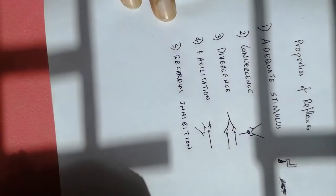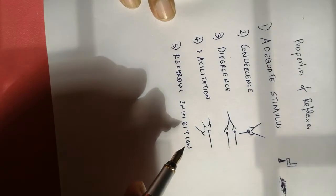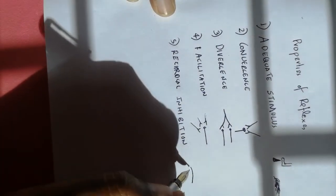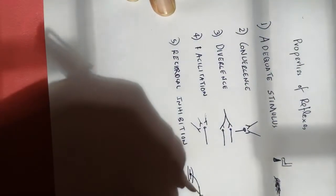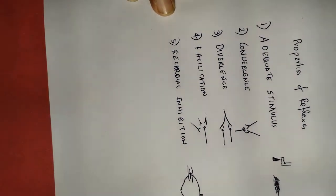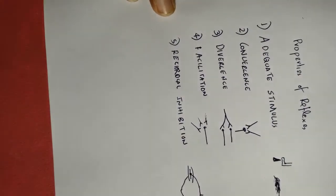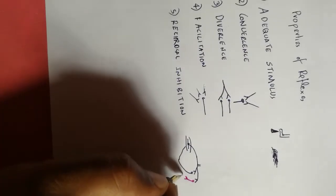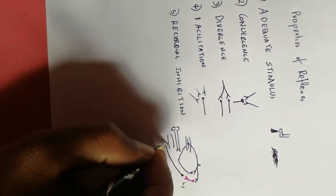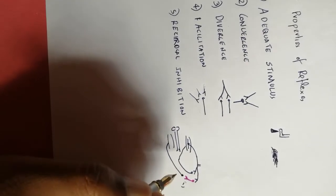Reciprocal inhibition is a question that has been asked multiple times in exams, so it's good to know from an exam point of view. One example: when you have a muscle spindle that goes to the spinal cord and supplies the lower motor neuron of that muscle, it also gives a branch that supplies an inhibitory interneuron. This inhibitory interneuron then supplies the antagonist muscle. That is one example of reciprocal inhibition.